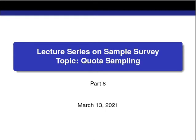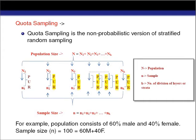In the previous part we discussed about stratified random sampling. In stratified random sampling, we divide the whole population into subcategories called strata on the basis of some characteristic of the population. After dividing the population into various strata, we draw the sample from each stratum using simple random sampling, and the sum of sample sizes from all strata equals the total desired sample size.